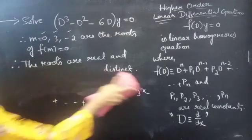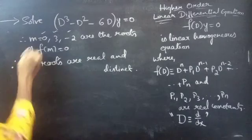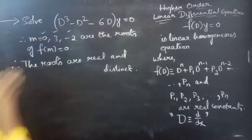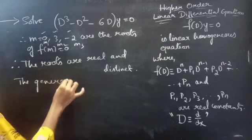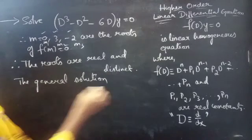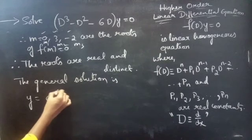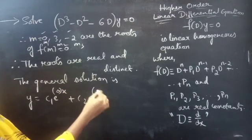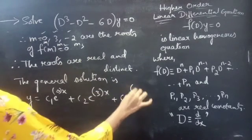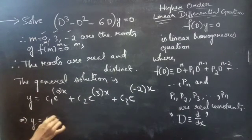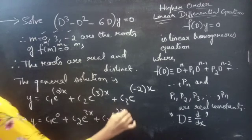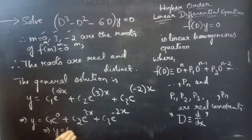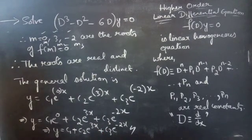Since we have 3 roots, consider 0 as m1, 3 as m2, and minus 2 as m3. Then the general solution is y equals to c1 e to the power 0 times x plus c2 e to the power 3x plus c3 e to the power minus 2x. Simplifying, y equals to c1 plus c2 e to the power 3x plus c3 e to the power minus 2x, which is the required general solution to the problem.